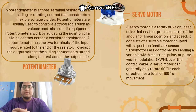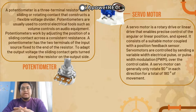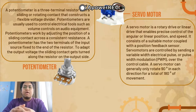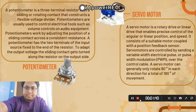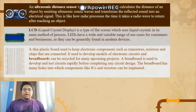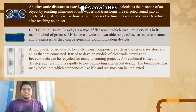Then there is the servo motor — a rotary or linear drive that enables precise control of angular and linear position and speed. It consists of a suitable motor coupled with a position feedback sensor. Servo motors are controlled by sending a variable electrical pulse or pulse-width modulation (PWM) over the control cable. A servo motor can generally only rotate 90 degrees in each direction, for a total of 180 degrees of movement. The eighth component is the ultrasonic distance sensor — an electronic device that calculates the distance of an object by emitting ultrasonic sound waves and converting the reflected sound into an electrical signal, similar to how radar works.